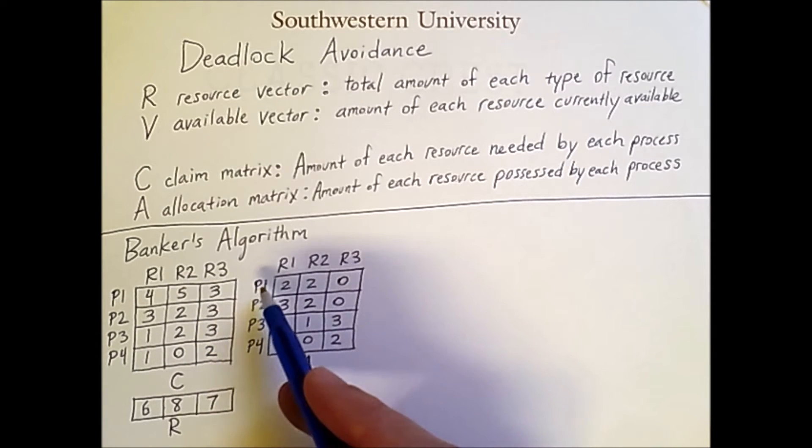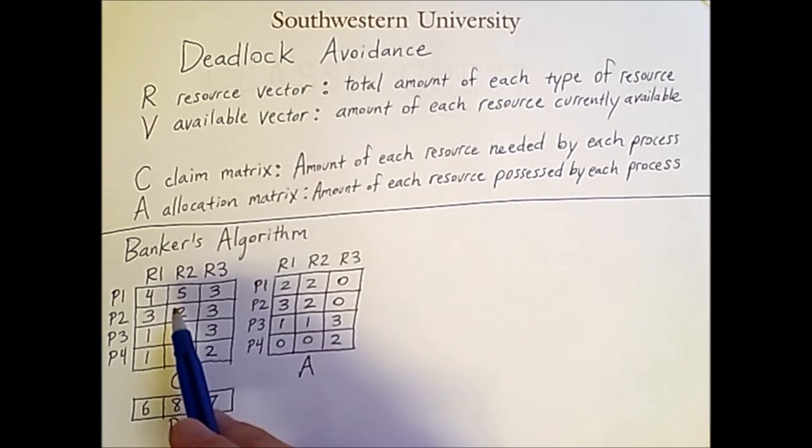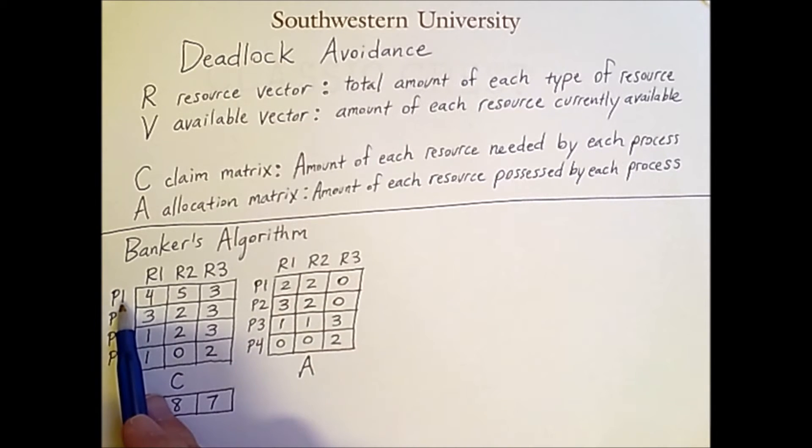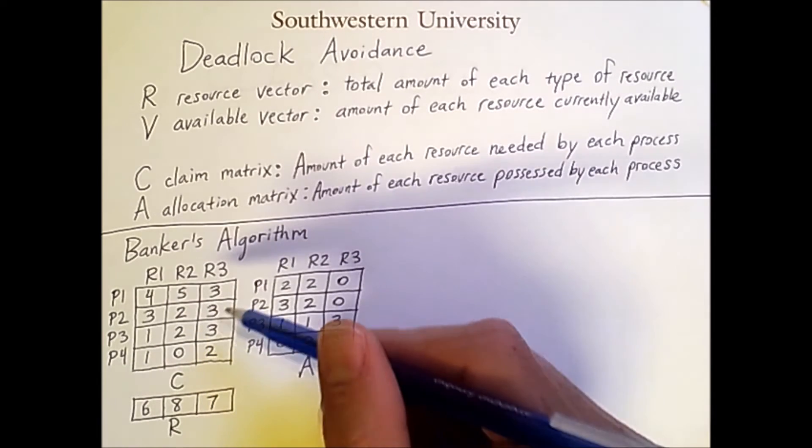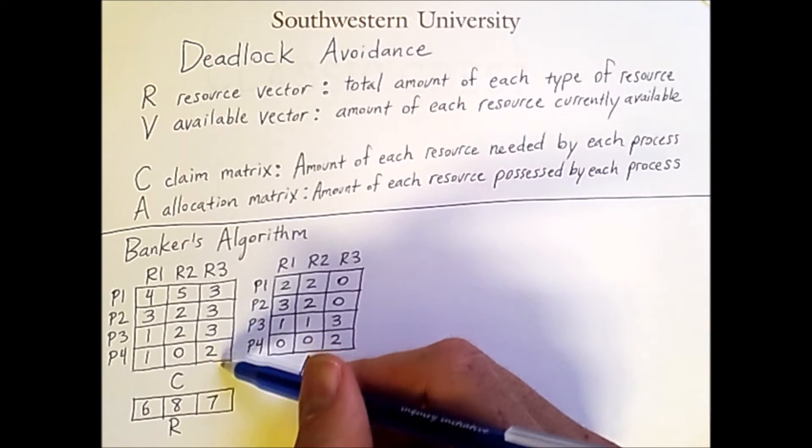So at some point between starting and finishing, process 1 will need to simultaneously hold 4 units of resource 1, 5 units of resource 2, and 3 units of resource 3. It doesn't necessarily need all of this throughout the entirety of computation. It just needs to have them at some point during its computation. And we also have similar information for the other processes.